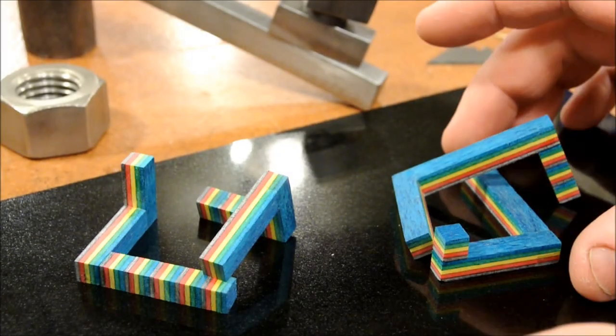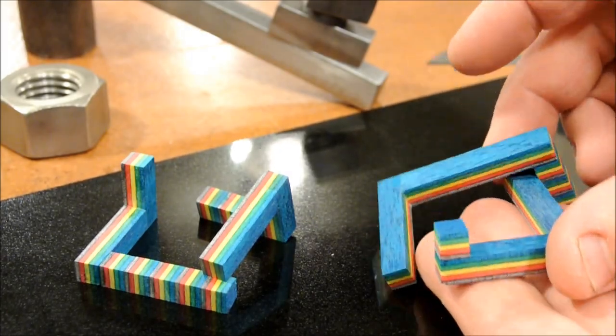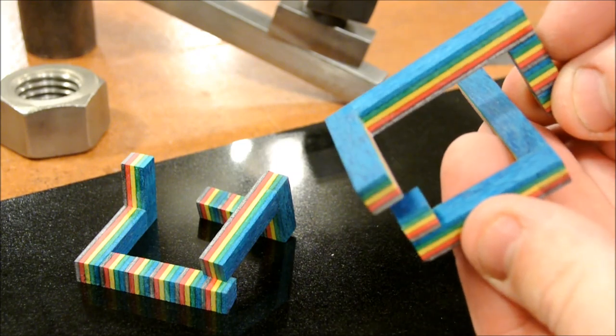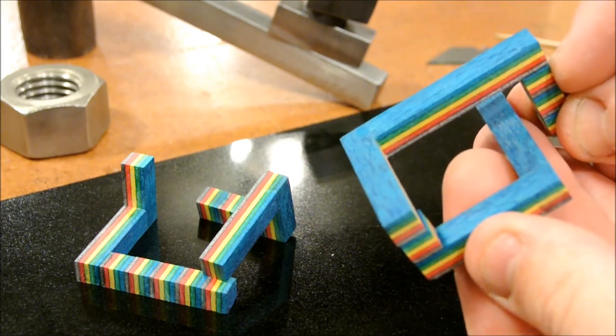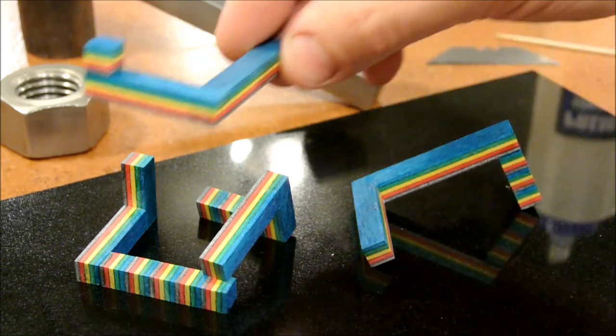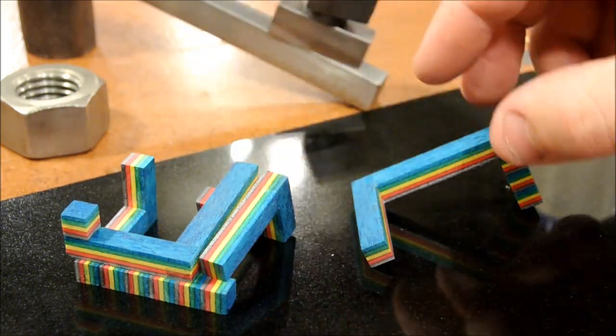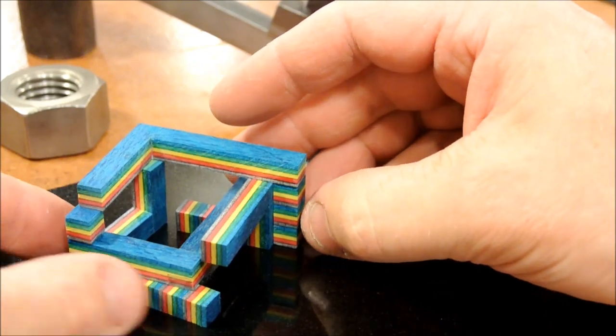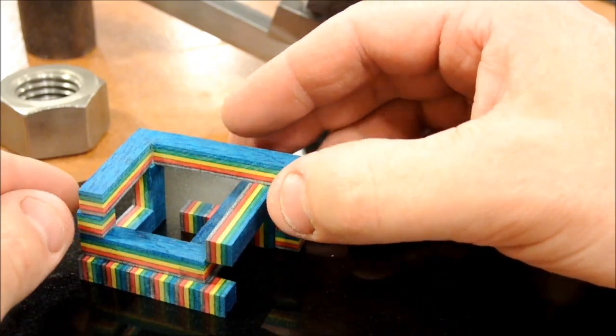It is now time for the final assembly. I'd like to attach these two parts that have the sevens on them, and I want to attach them like this. In order to do that, I'm going to use the other two remaining parts as kind of a cradle to help ensure that they're square and spaced correctly.